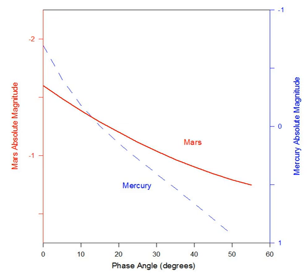The brightness of the Saturn system depends on the orientation of its ring system. The rings contribute more to the overall brightness when they are more inclined to the direction of illumination from the Sun and to the view of the observer. Wide open rings contribute about one magnitude of brightness to the disk alone. The icy particles that compose the rings also produce a strong opposition surge. Hubble Space Telescope and Cassini spacecraft images have been analyzed to characterize the ring particles based on their phase curves.